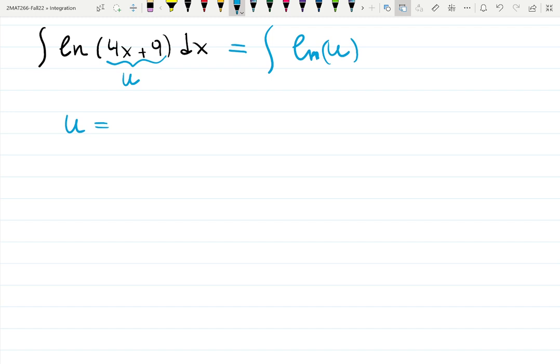Indeed, let's do that. If u is 4x plus 9, then du is 4 dx. We need dx but we have 4 dx. Let's solve for dx. Then dx ends up to be one quarter du. This is u-substitution.